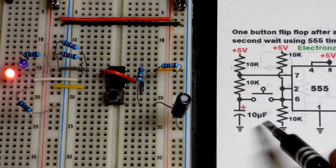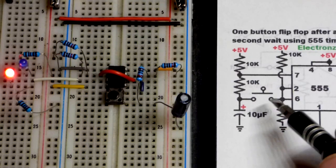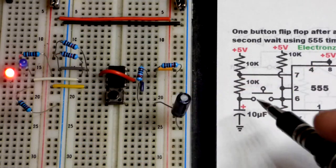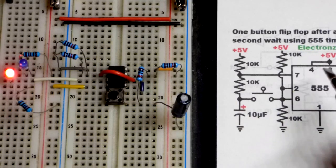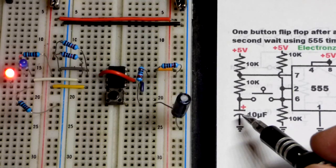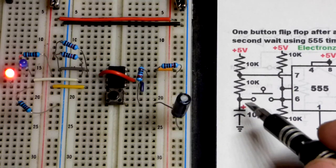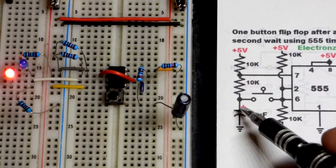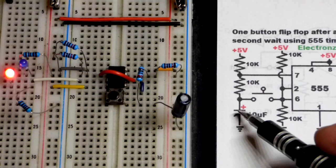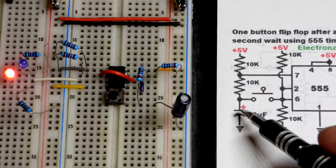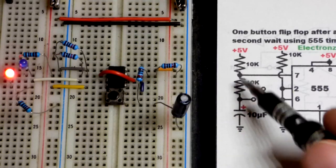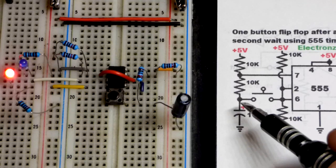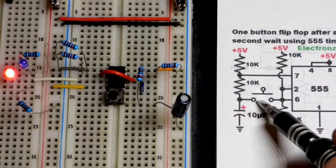When we start off, the capacitor has to charge. I think the output will be high to begin with, I could be wrong. But in any case, when I don't press the switch, the capacitor will charge. While it's charging, the output is high - that's the main takeaway. So it can go through those two resistors and it just charges.